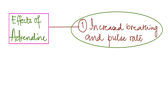Increased pulse rate increases the rate of blood flow through the blood vessels throughout the body. This supplies more glucose and more nutrients, helping the body prepare itself for those special emergency circumstances.